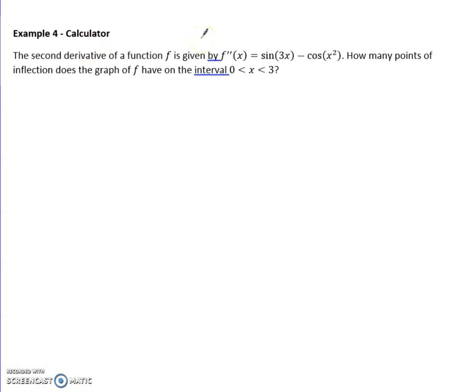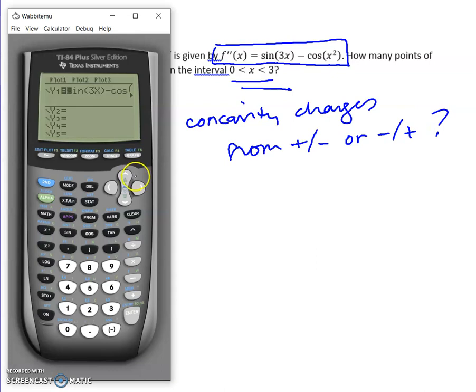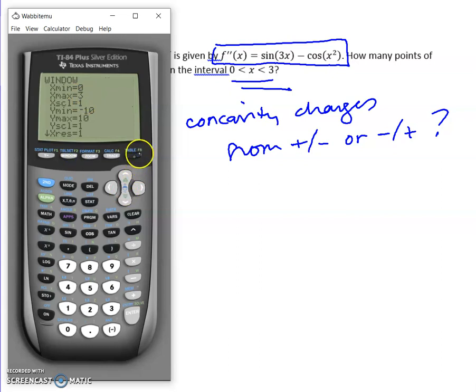Okay, this is a calculator question. We're given the second derivative, and the question is just how many points of inflection does it have? Well, remember, first of all, we're only looking from 0 to 3, so that's important to keep in mind. If we already have the graph that's the second derivative, and we want to find points of inflection, then we need to see points where the concavity changes from up to down or from down to up. So those are the things that we're looking for. So let's graph this. So I'm plugging in sine of 3x minus cos of x squared. I only want my window to go from 0 to 3, so I'm changing my window to 0 to 3.